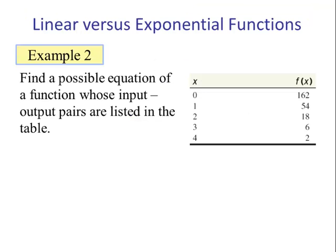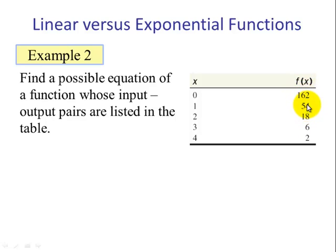Example 2. Find a possible equation of the function whose input-output pairs are listed in the table. When x is 0, f(x) is 162. As x increases by 1, f(x) is decreasing, but not by the same amount — so this could be an exponential function. We take 162 divided by 54 to get 3. Then 54 divided by 18 is 3, 18 divided by 6 is 3, and 6 divided by 2 is 3. So we are dividing by a constant number.